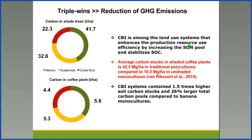And lastly, coffee-banana intercropping contributes to the reduction of greenhouse gases in that the CBI system is among the land use systems that enhances production resource-use efficiency by increasing the soil organic matter pool and stabilizing soil organic carbon. From this chart, we noticed that carbon in shaded trees is much higher than in unshaded systems.